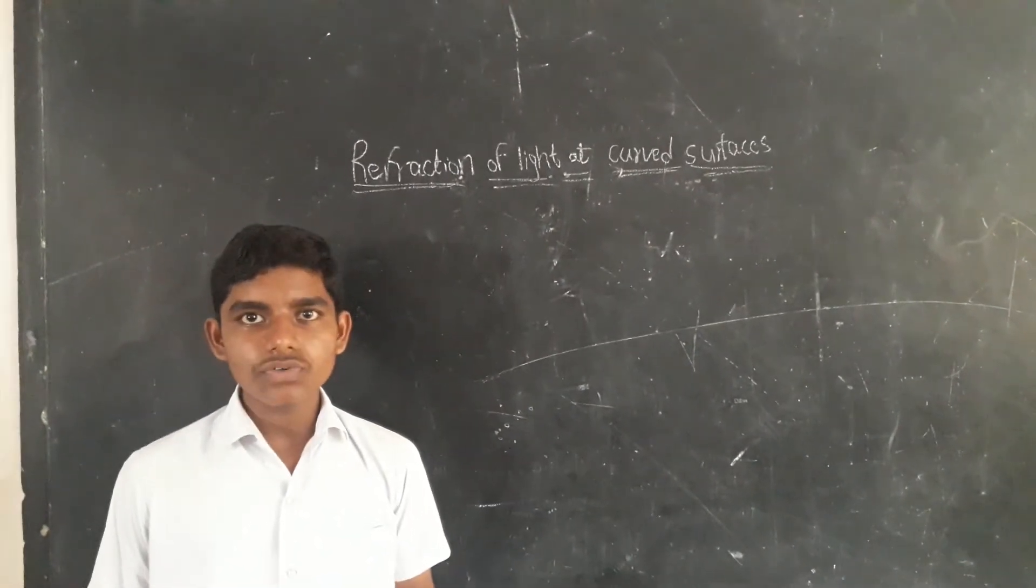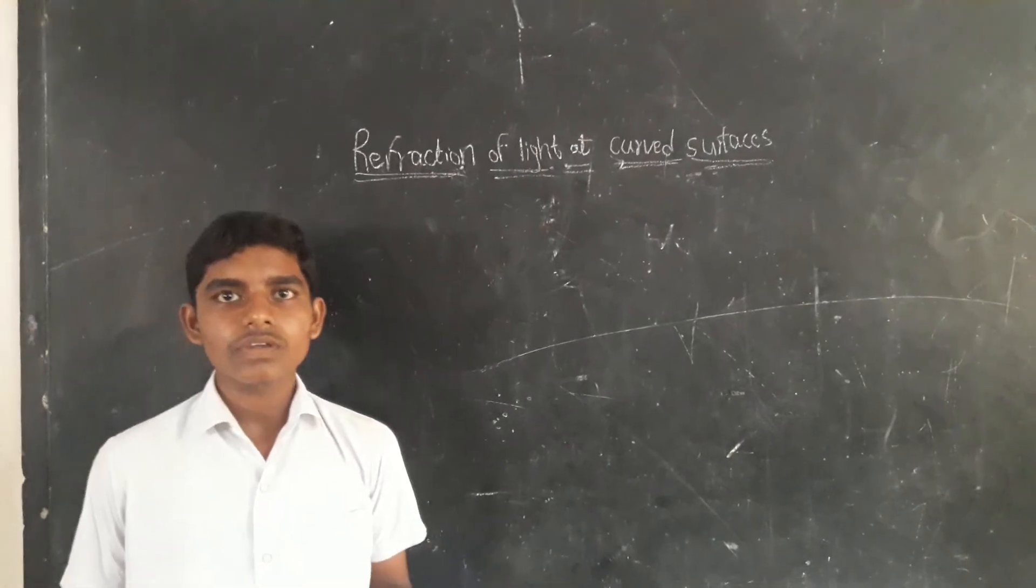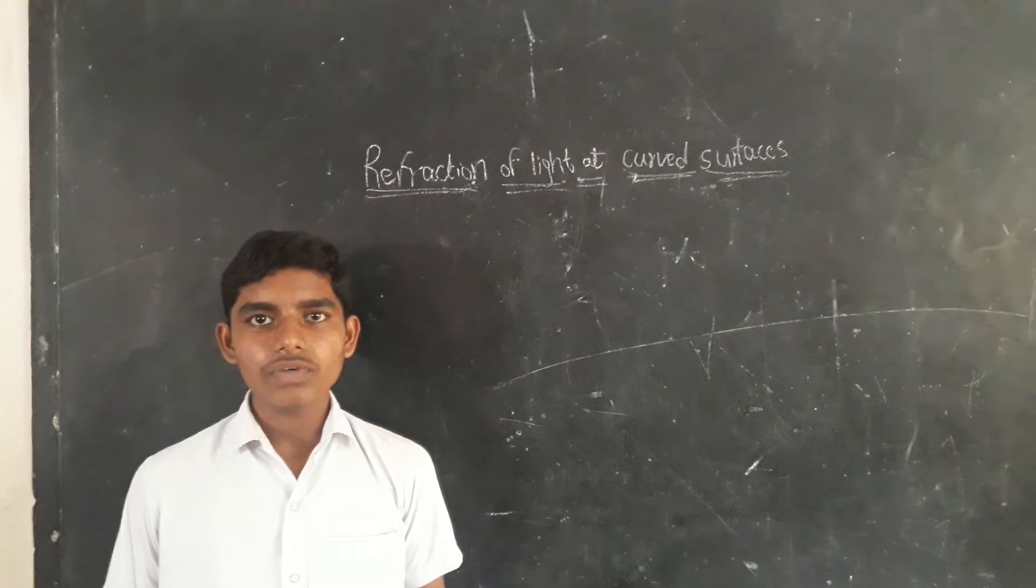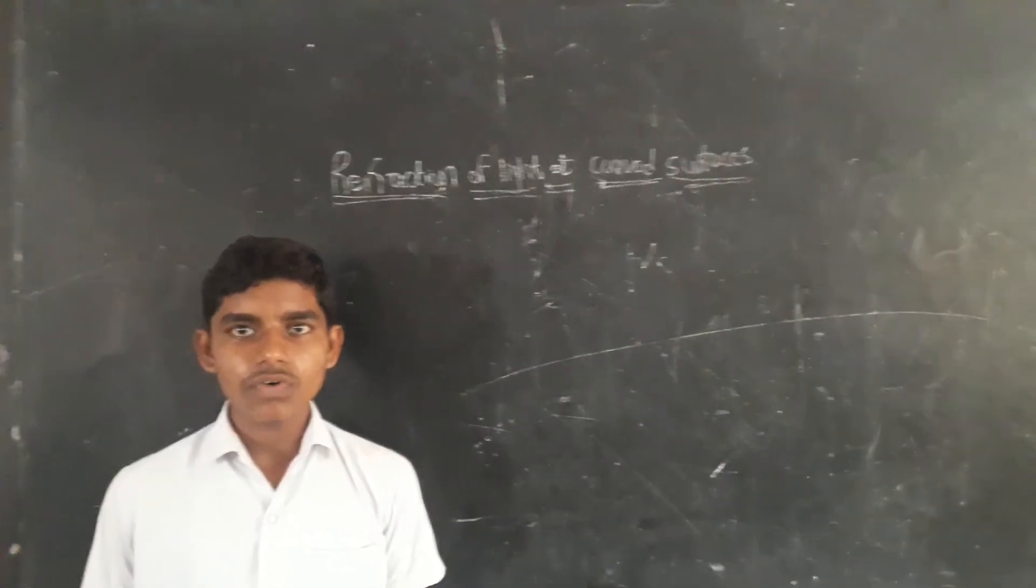Now, what is meant by lens? The lens is formed when a transparent material is bounded by two surfaces of which one or both are curved. This is called lens.